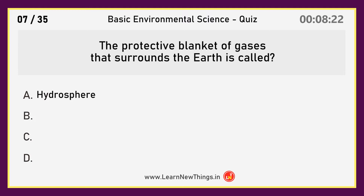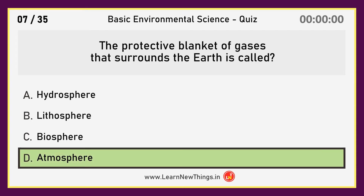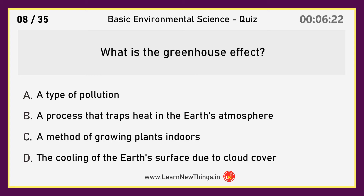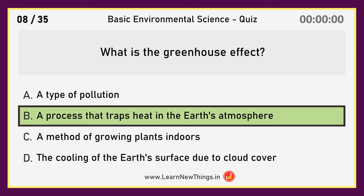The protective blanket of gases that surrounds the Earth is called Atmosphere. What is the greenhouse effect? A process that traps heat in the Earth's atmosphere.